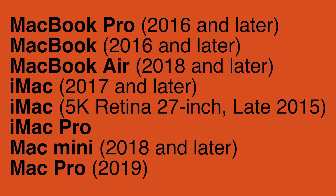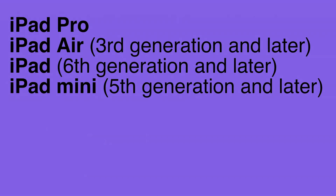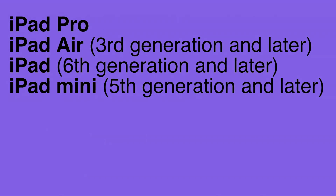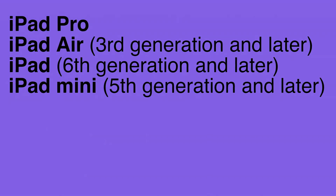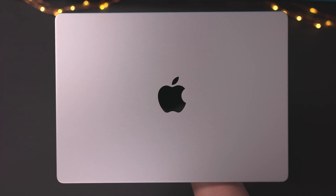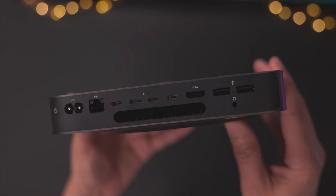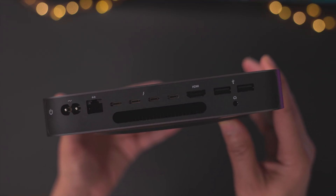Universal Control works with the MacBook Pro 2016 or later, MacBook 2016 or later, MacBook Air 2018 or later, iMac, iMac Pro, and more. Importantly, Universal Control also works with Intel Macs. For iPads, it works with the iPad Pro, iPad Air 3rd generation or later, iPad 6th generation or later, and iPad Mini 5 or later. So it's a pretty well-rounded list covering iMacs, MacBook Pro, Mac Mini, all types of iPads, and Intel Macs.